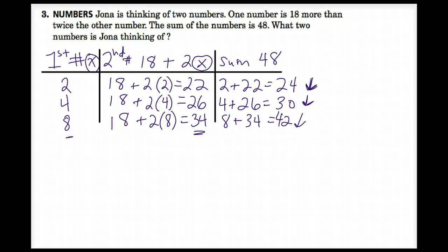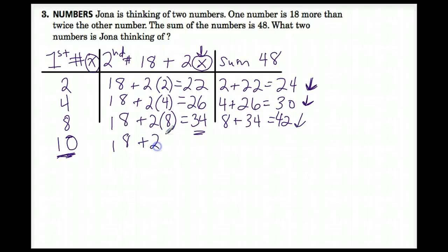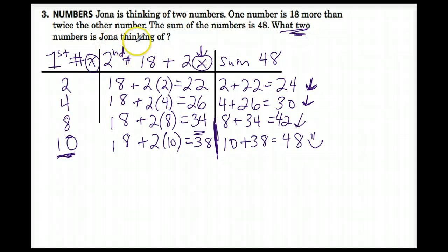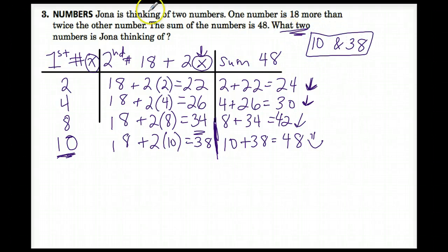Now let's try 10. We put 10 in for X: 18 plus 2 times 10 equals 20 plus 18 = 38. Does 10 plus 38 equal 48? Yes, it does — right on the money. So what two numbers is Jonah thinking of? 10 is our first number and 38 is our second number. Make sure you box 10 and 38 as your answer.